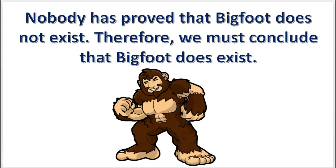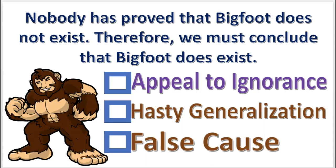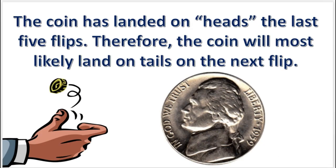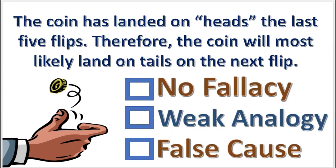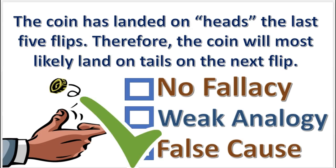Next practice problem. What fallacy is committed in this argument? Press pause — the answer will appear in 3, 2, 1. Ding! False cause. This is the gambler's variety of the fallacy. Tosses of a coin are not causally related.